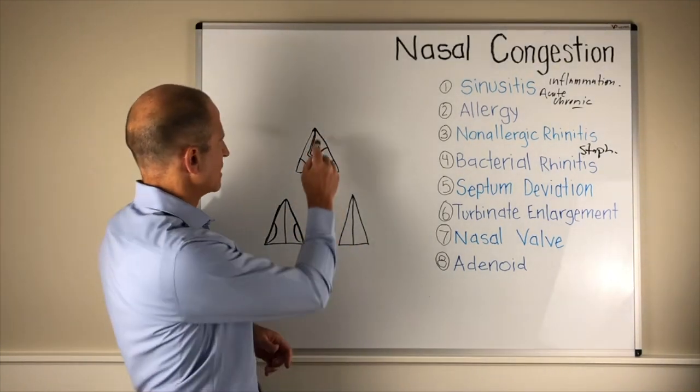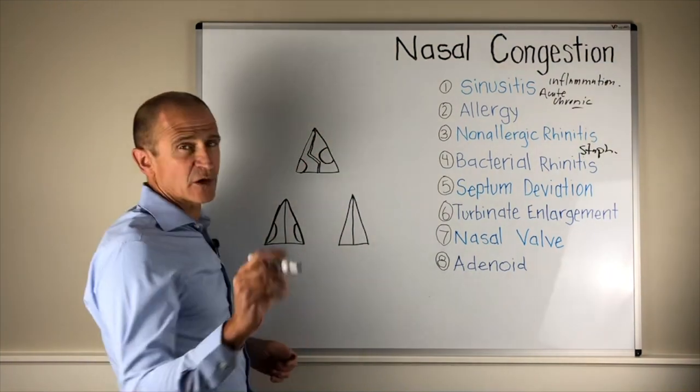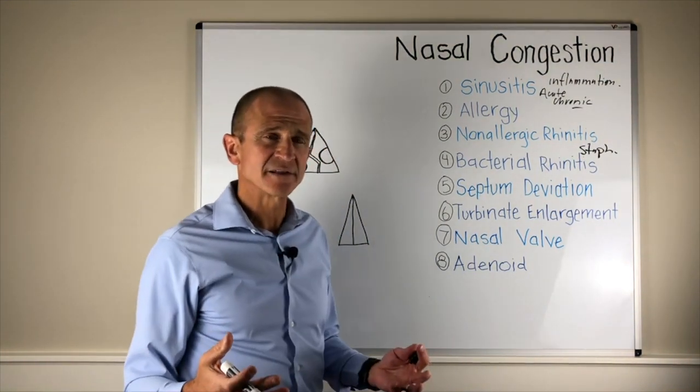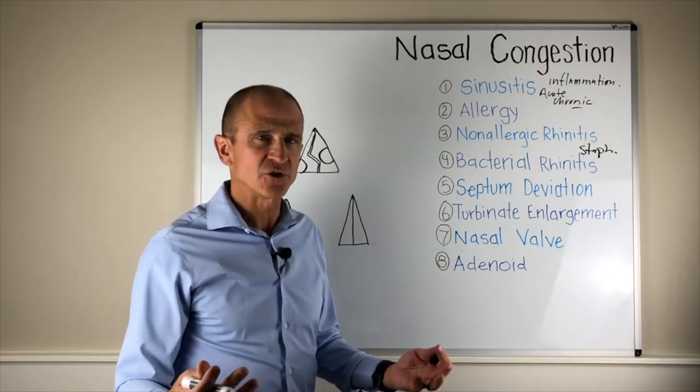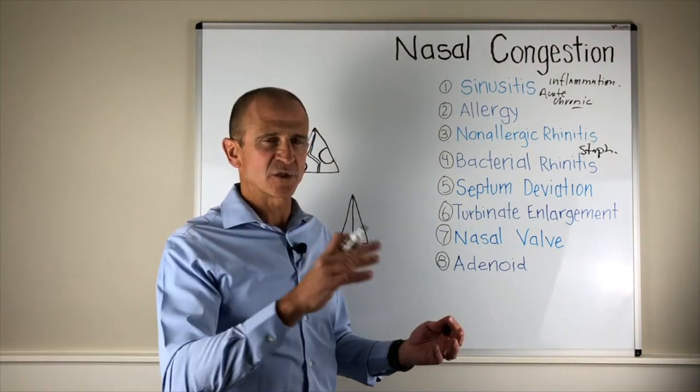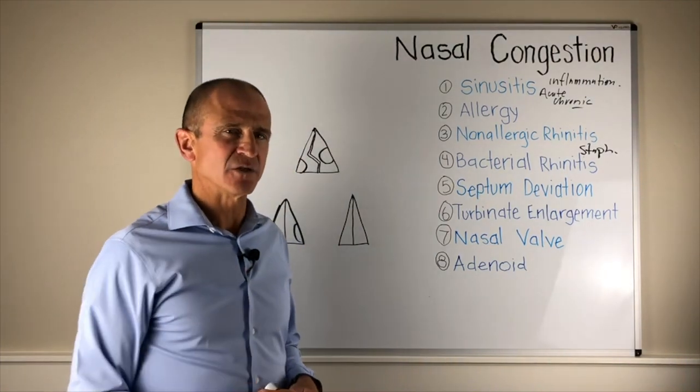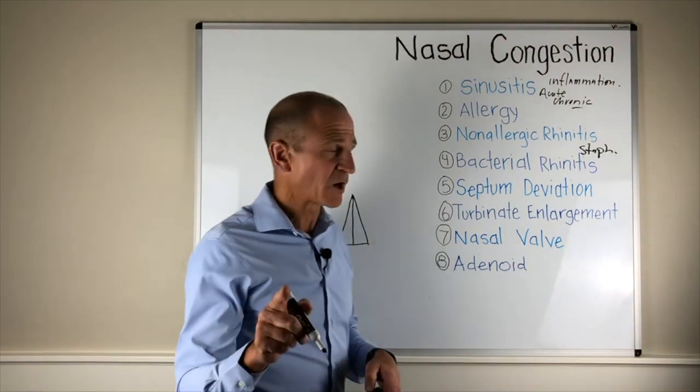Typically, when there's a septum deviation, the other structures in the nose called turbinates can compensatorily enlarge, filling in the extra space. And oftentimes, that needs to be addressed during surgical procedures as well.